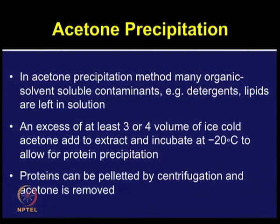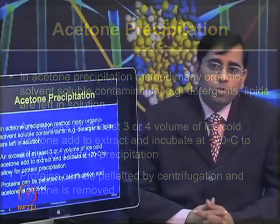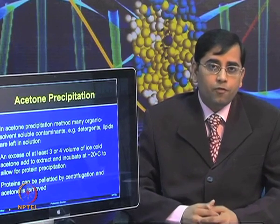In acetone precipitation, many organic solvent-soluble contaminants such as detergents and lipids are left in solution, making it very effective. Add at least three to four volumes of ice-cold acetone to your extract, incubate at minus 20 degrees for one to two hours, and allow proteins to precipitate. By performing this step, proteins can be pelleted during centrifugation, and then you remove and dry out the acetone. Acetone precipitation is a very easily performed and effective method.